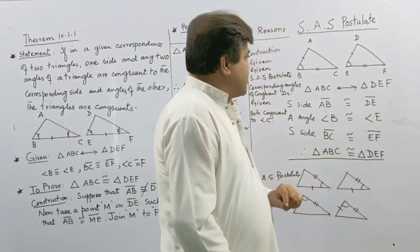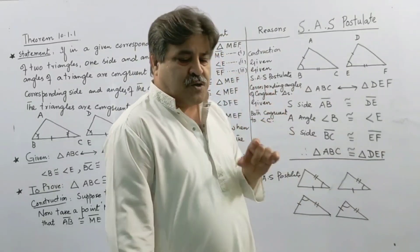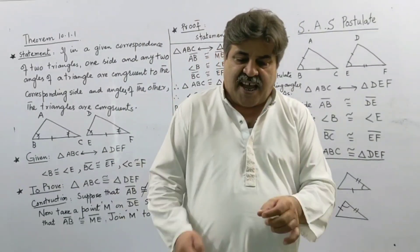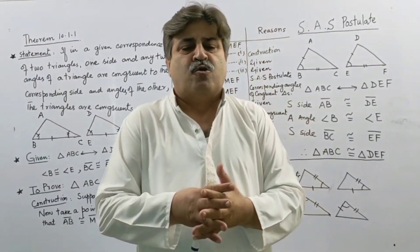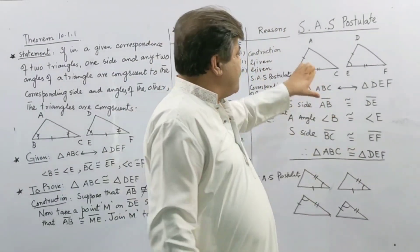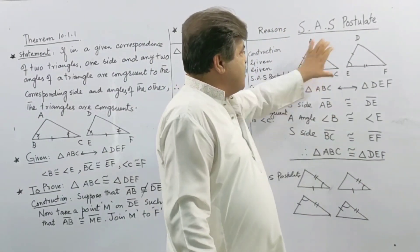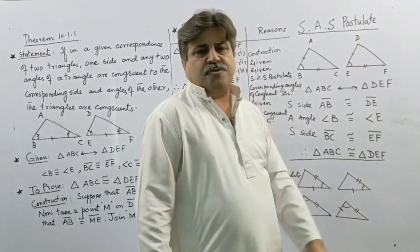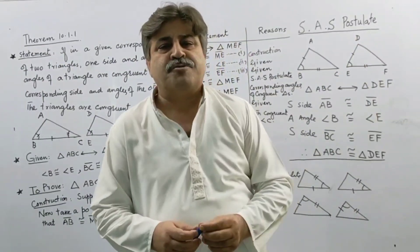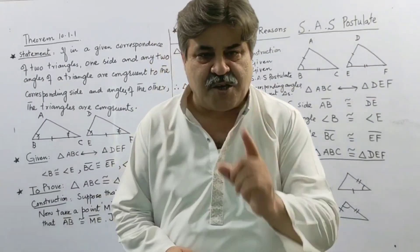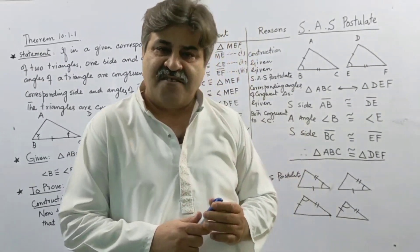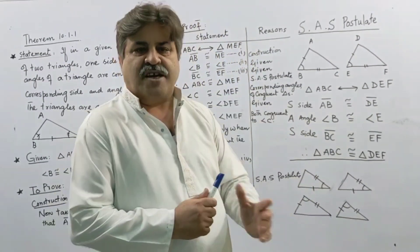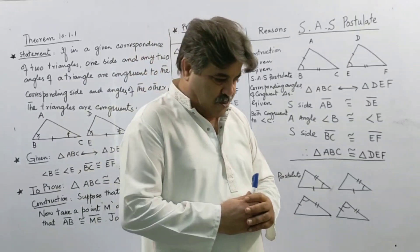So this is the SAS postulate: if two sides and an included angle of the first triangle are congruent to the corresponding two sides and the included angle of the other, the triangles must be congruent.